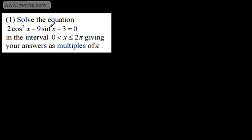Looking at this equation, we've got sinx and cos²x. In these cases, we want one trig ratio — either cosine or sin. Because we've only got sin to the first power and cos to the second power, I'm going to use an identity to rewrite this as a quadratic equation in sin, as we saw in the last video.